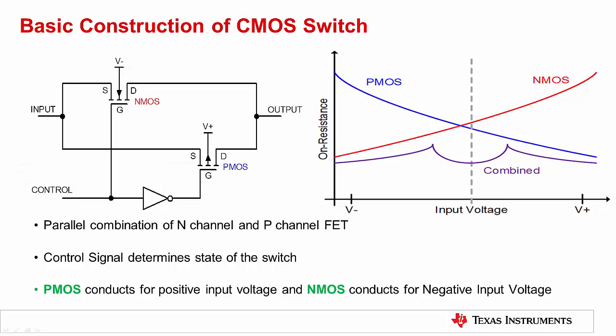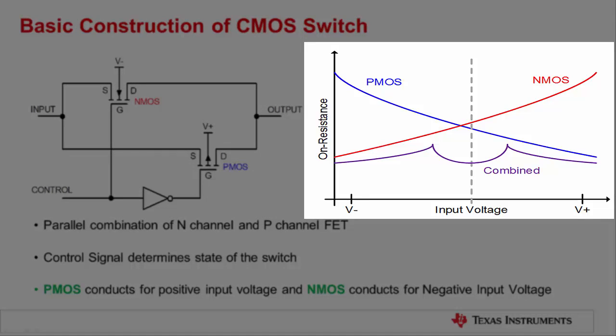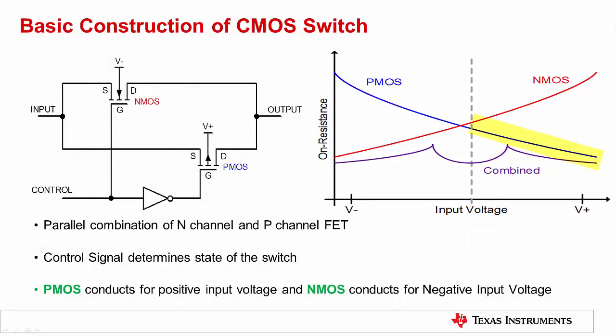Several CMOS switches can be combined with some simple logic control to create a multiplexer. Although the CMOS switch input pin and output pin are interchangeable, for simplicity, we will assume the source pin is the input and the drain pin is the output of the CMOS switch. PMOS and NMOS switches have a voltage-dependent resistance, which varies with the input signal, as shown in the on resistance versus input voltage curve here. PMOS switches offer lower on resistance for positive input voltages, while NMOS switches offer lower on resistance for negative input voltages. The parallel combination of these two devices has a combined on resistance which has a much lower variation with input voltage swing, and allows us to pass both signal polarities with equal ease.